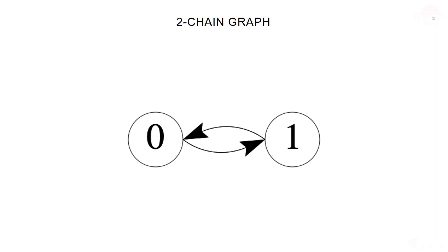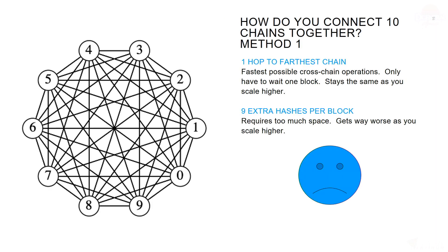If we were going to connect 10 chains, there are a lot of different ways we could do it. This graph gives us one hop to get to the farthest away chain. That's good because it gives you the fastest possible cross-chain operations, but it requires nine extra hashes to be stored in every block. That's too much space, and it gets way worse if you need to get to larger numbers of chains.